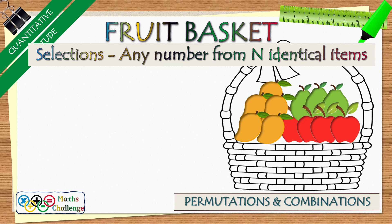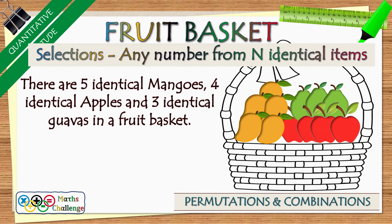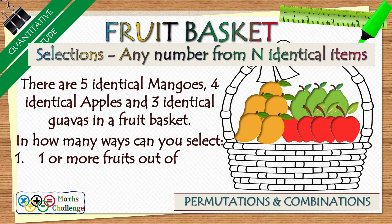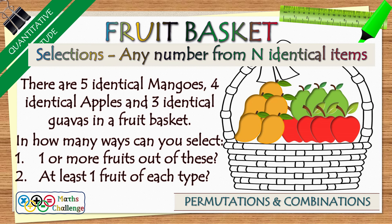Welcome to IPM Leap. In today's video we are going to talk about all possible selections in the scenario when objects are identical. Suppose you have a fruit basket which has five mangoes, four apples, and three guavas. Fruits of any type are identical — all mangoes are alike, all apples are alike, and so are all guavas. We have to find: first, in how many ways can we select one or more fruits, and second, in how many ways can we select at least one fruit of each type.